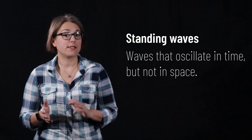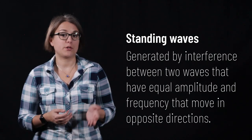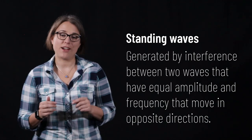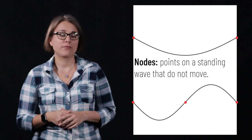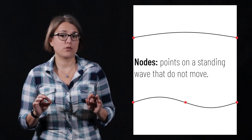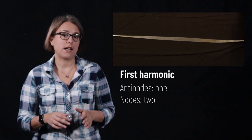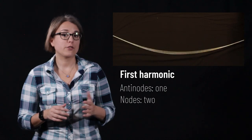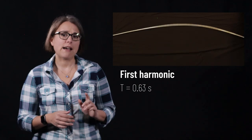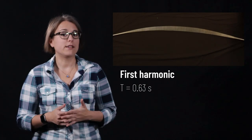Standing waves are waves that oscillate in time but do not move at all in space. They occur due to interference between two waves that have equal amplitude and frequency and travel in opposite directions. I can generate a standing wave in a coiled rope by shaking one end up and down — this creates one wave which reflects off the back end and travels back toward my arm, and by shaking it at just the right frequency, the forward and backward waves interfere to create a standing wave. Locations on a standing wave that are fixed are known as nodes; locations where the wave oscillates between minimum and maximum values are called anti-nodes. The first harmonic — also called the fundamental mode — has one anti-node and two nodes. I calculated the period of the wave to be 0.63 seconds.